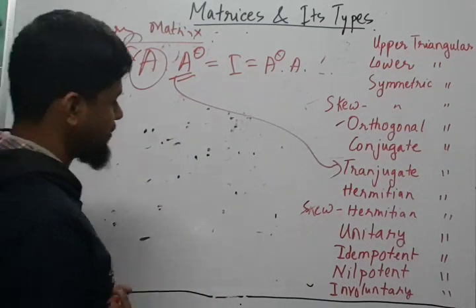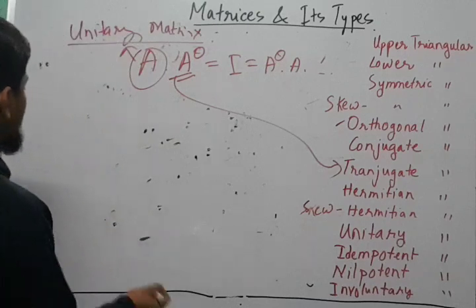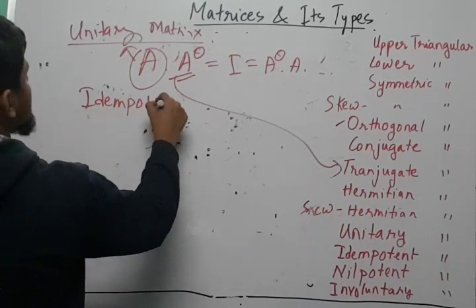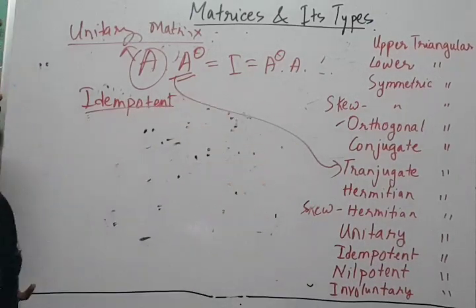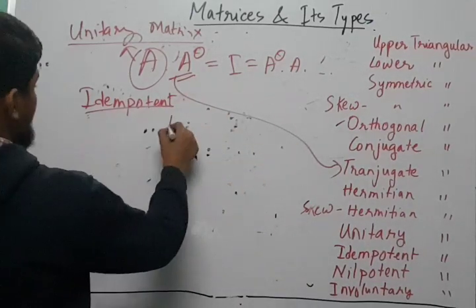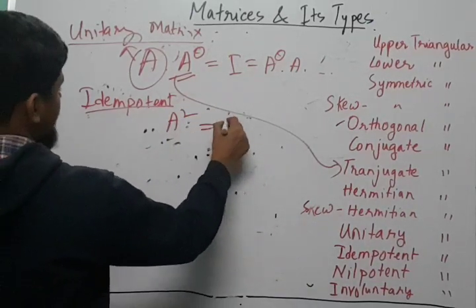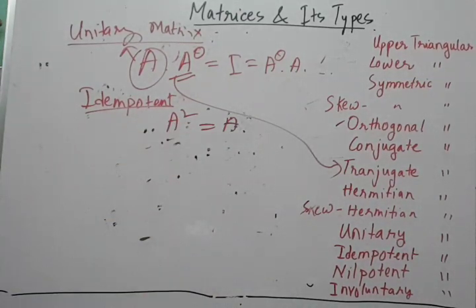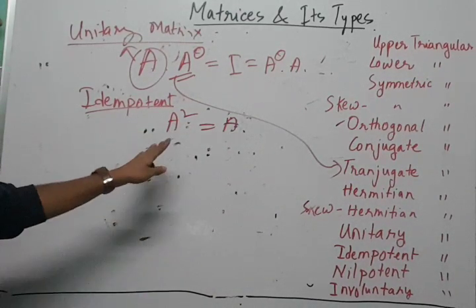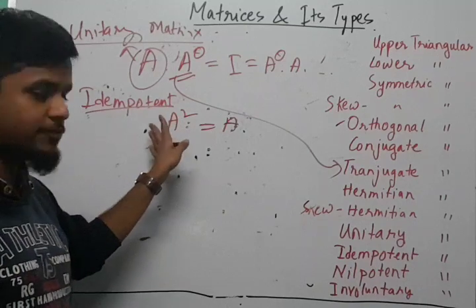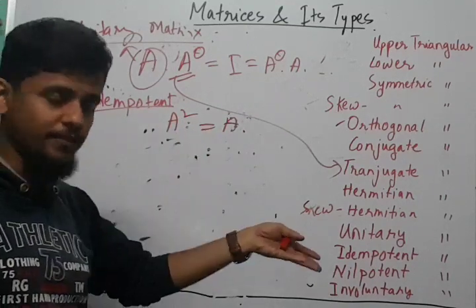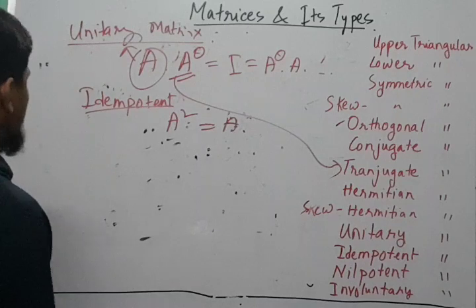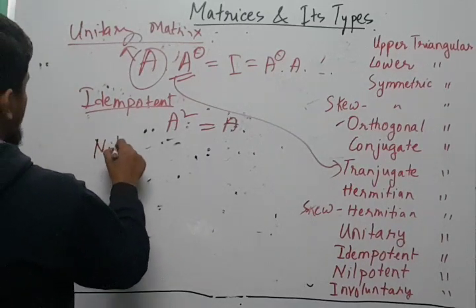In an idempotent matrix, if A is idempotent, then A² equals A — the square of the matrix equals the matrix itself. Moving on to the nilpotent matrix: if we have a matrix A raised to the power n, and that result equals a null matrix, then A is a nilpotent matrix.